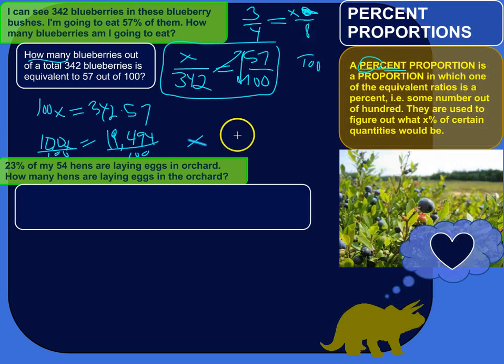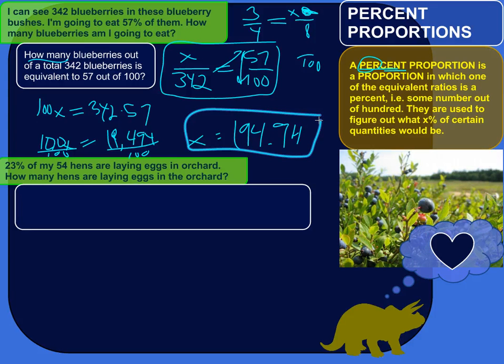So 194.94 blueberries. I guess you eat everything except for like that kind of little crunchy part of the top or something, I don't know. So 194.94 blueberries out of 342 blueberries is equivalent to 57 out of 100. So that's 57% of 342.